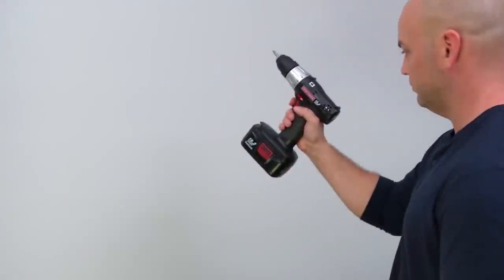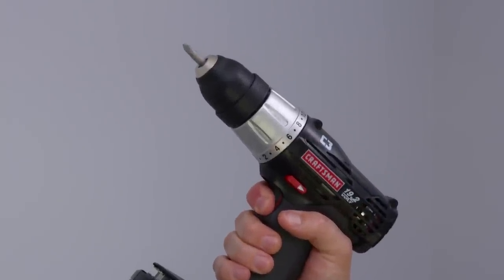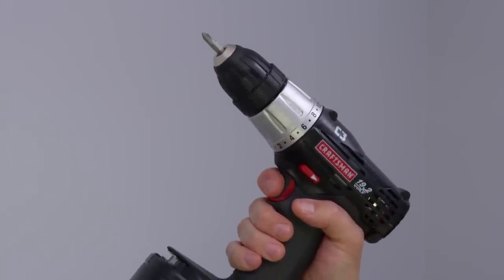The trigger on the handle is your main control. A variable speed drill lets you start drilling slowly and speed up based on the pressure you put on the trigger, just like pressing the accelerator on your car.